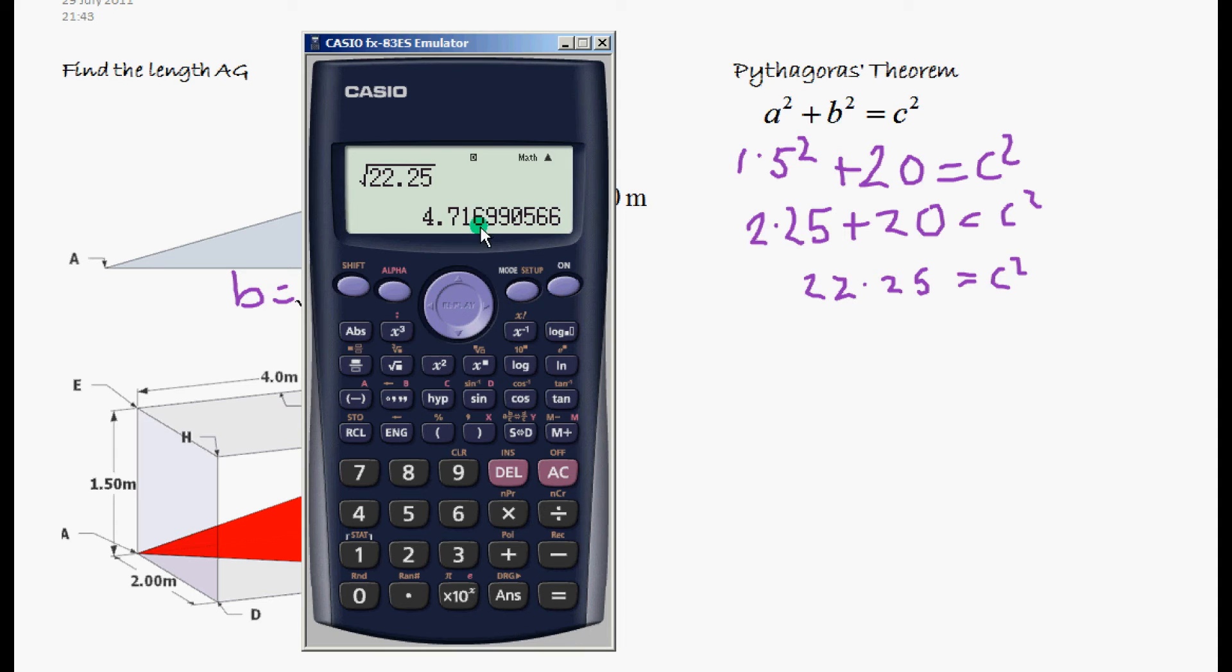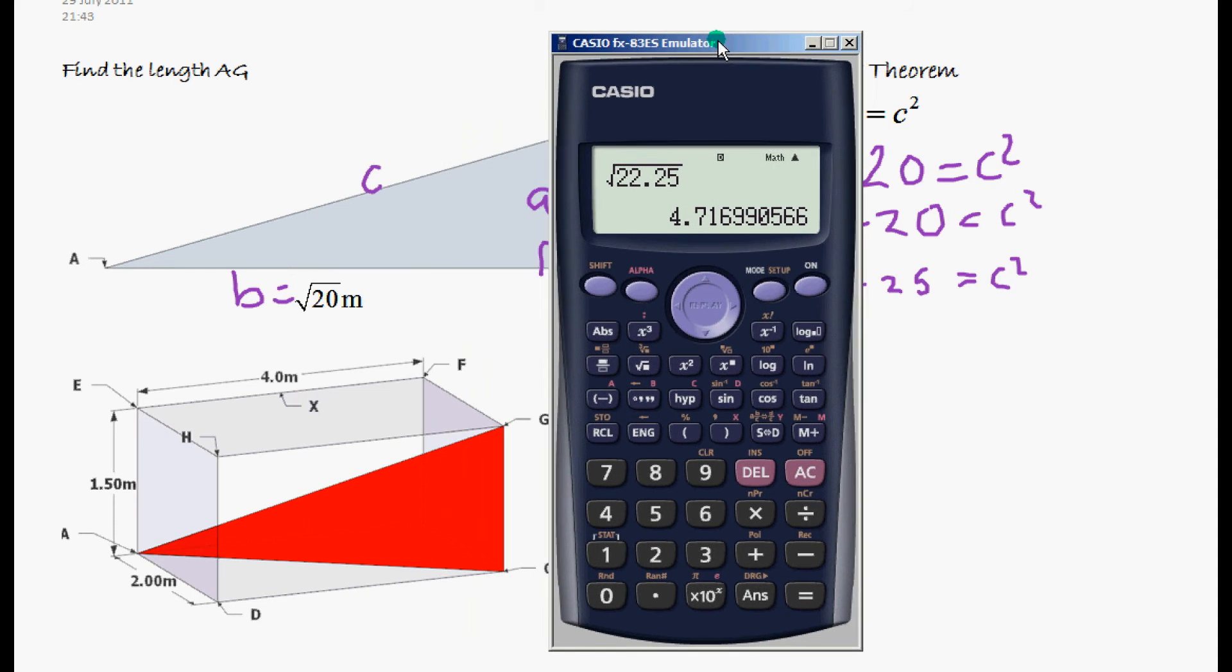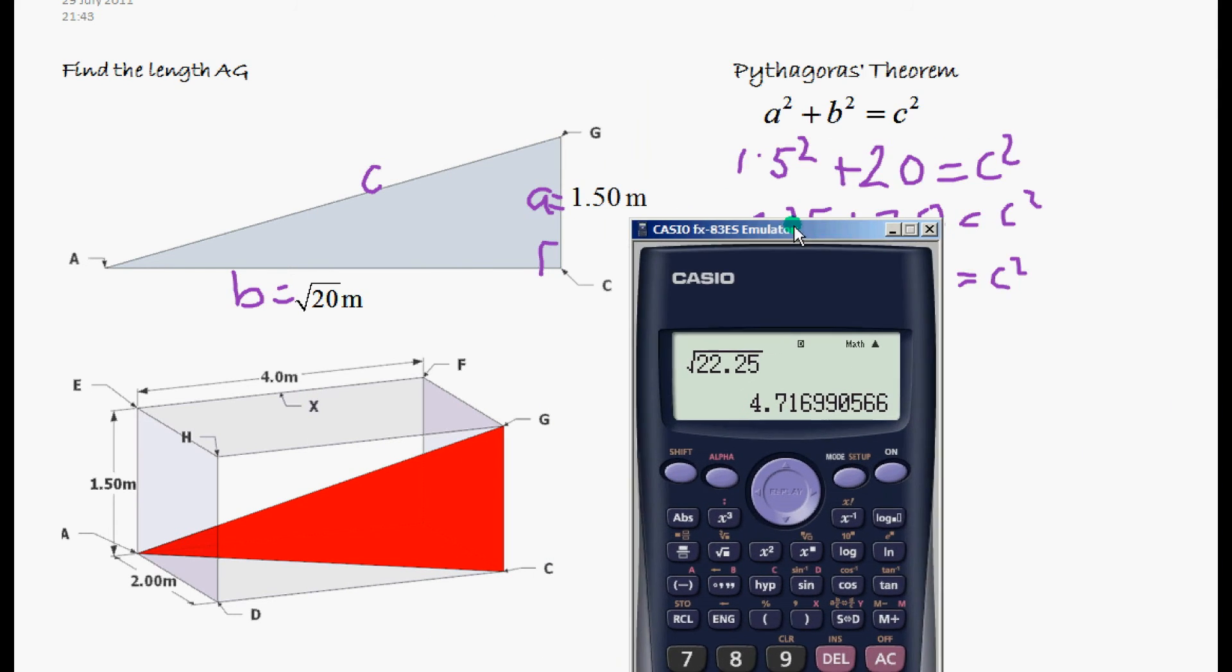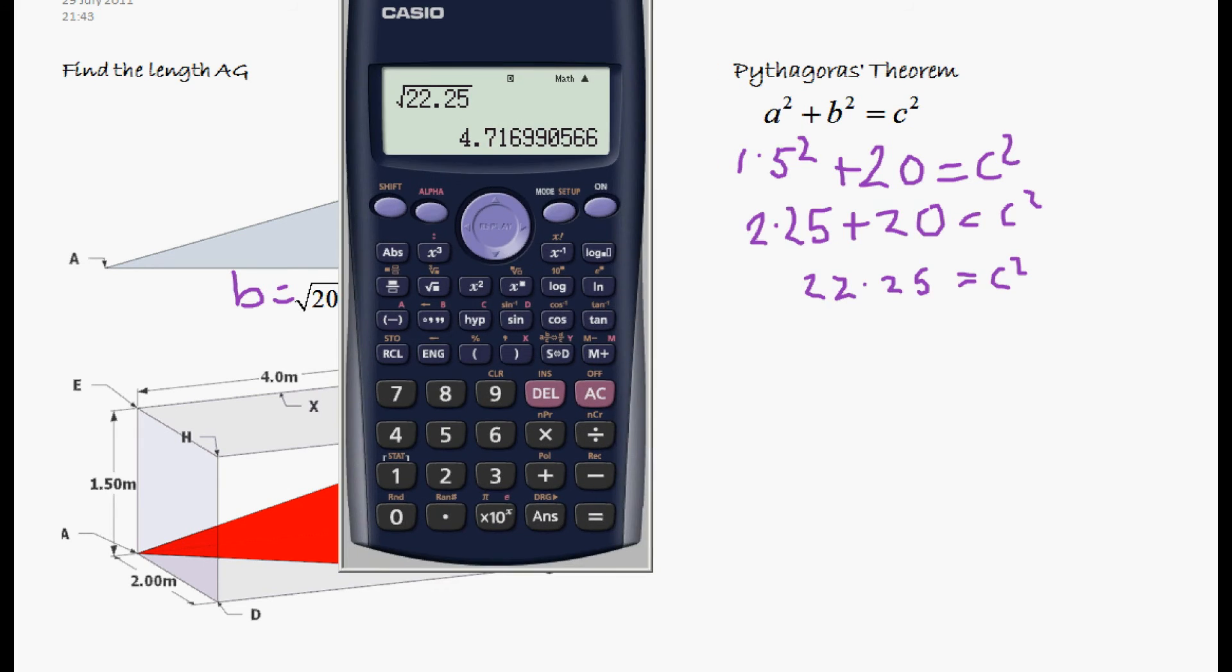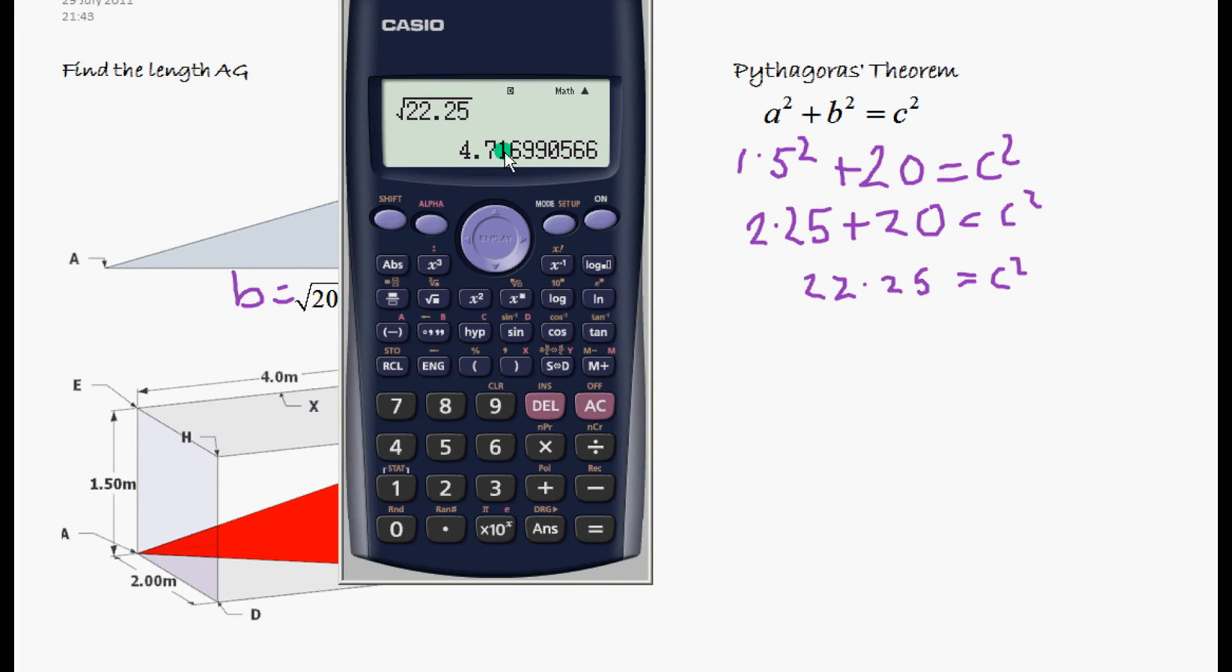Now, we're going to round this to three significant figures. Four, but it is five or bigger. Yes, that's six. So we're going to round that up to 4.72.